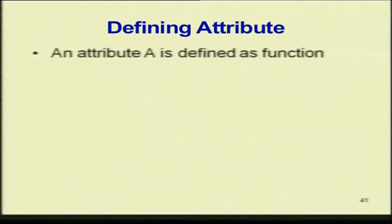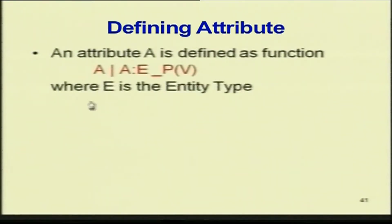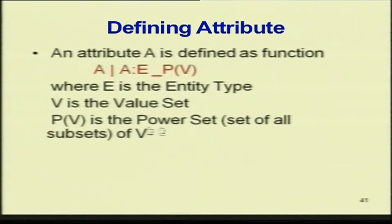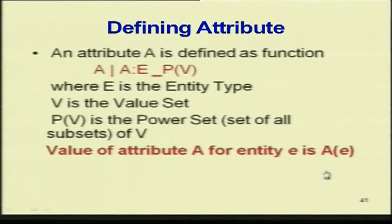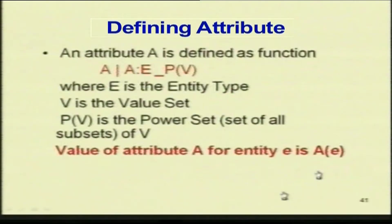Formally, an attribute A is defined as a function where E is the entity type, V is the value set, and P(V) is the power set — the set of all subsets of V. The value of attribute A for entity e is A(e). For example, age is 35 for this particular attribute instance, meaning the value of this particular attribute is 35 for this particular tuple, where e is an entity of type E.